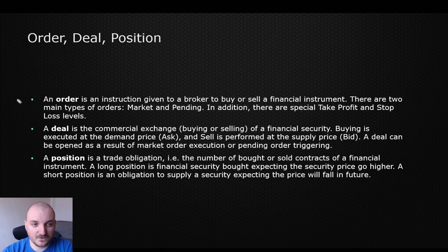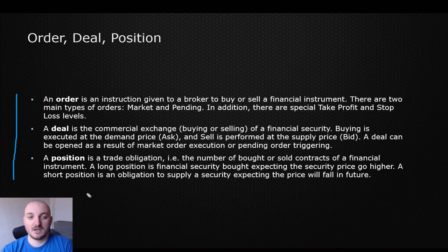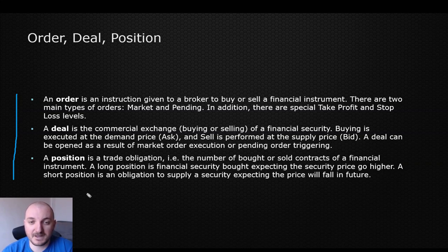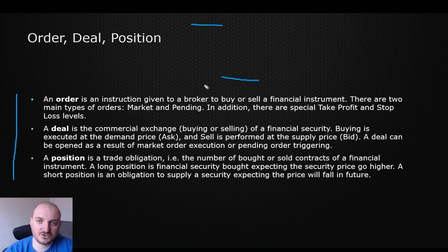This is the info I took from the website — the official information. Basically, an order is an instruction given by the broker to buy or sell a financial instrument. There are two types of orders: it could be market or pending. Market is when the order is executed at current market price, basically immediately, and pending is an order which has some conditions and is usually placed above or below the current market.